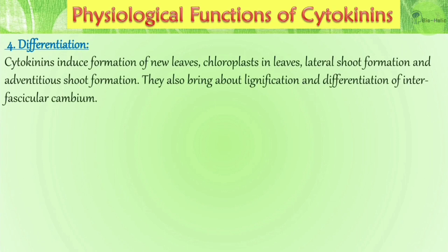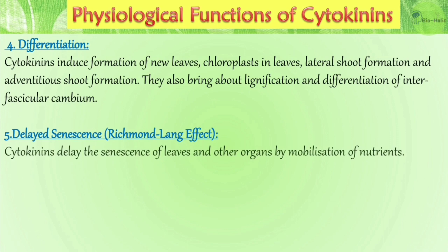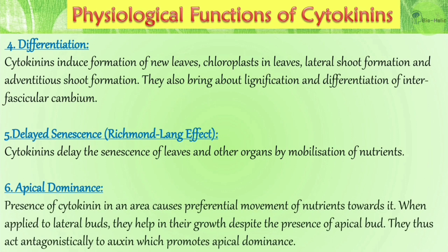Fourth, differentiation: cytokinins induce formation of new leaves, chloroplasts in leaves, lateral shoot formation, and adventitious shoot formation. They also bring about lignification and differentiation of interfascicular cambium. Fifth, delayed senescence — also known as the Richmond-Lang effect — according to which cytokinins delay the senescence of leaves and other organs by mobilization of nutrients. Presence of cytokinins in an area causes preferential movement of nutrients toward it. When applied to lateral buds, they promote growth despite the presence of the apical bud, acting antagonistically to auxin which promotes apical dominance.